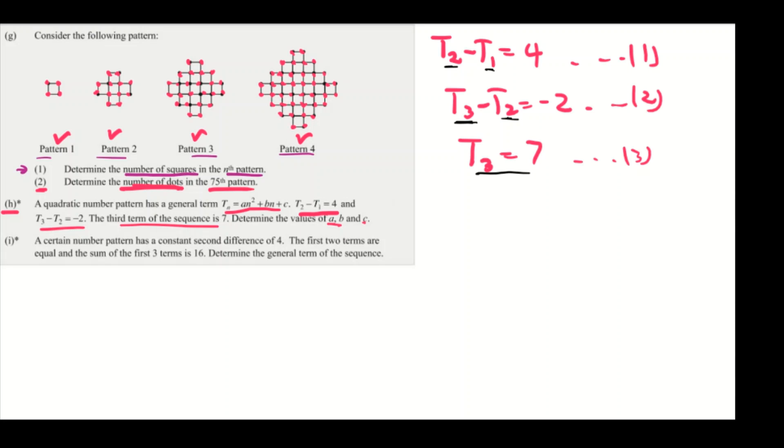So you're going to say T₃ minus T₂ equals -2. What is T₃? Seven minus T₂ equals -2. Transpose the seven to the other side. You have -T₂ equals -2 minus 7. Then -T₂ equals -9, and then you divide by -1 both sides, so T₂ equals 9. So your second term is 9.